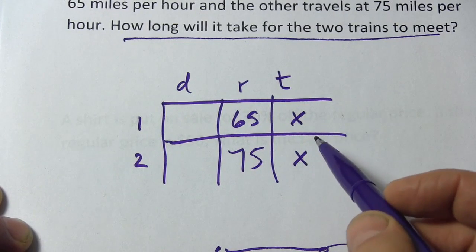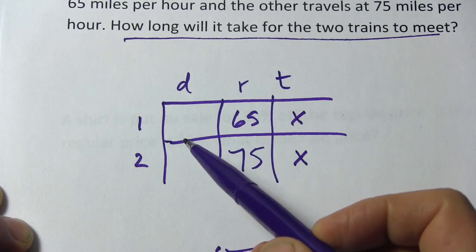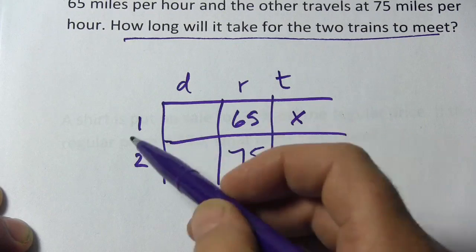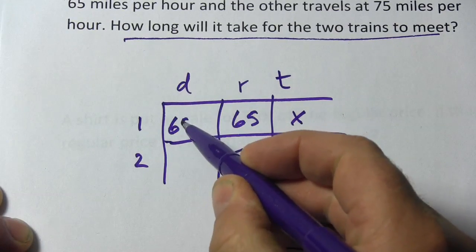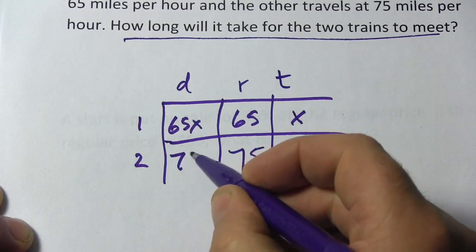I can fill that in with a variable. Now let's think about the distance. Distance equals rate times time. So the distance train 1 travels is just 65x. And the distance train 2 travels is going to be 75x.